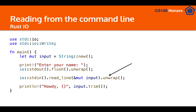The string is read into `input` and `input` is overwritten. We then call `.unwrap()`, which tells Rust: if there are any issues, just panic and crash the program. Don't worry — we'll cover a safer way to handle that later. Finally, we print the input and call `.trim()` to remove any whitespace from the beginning or end of the string.